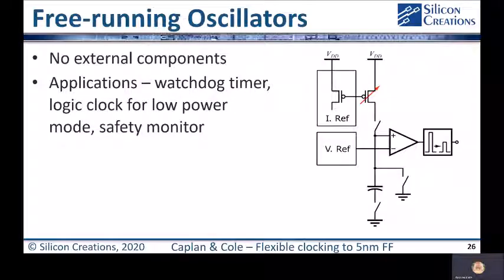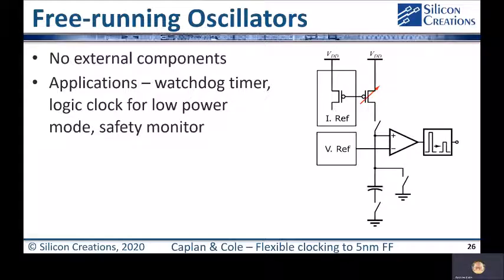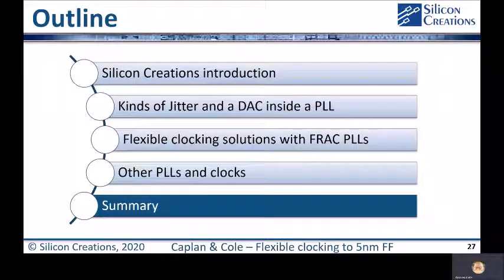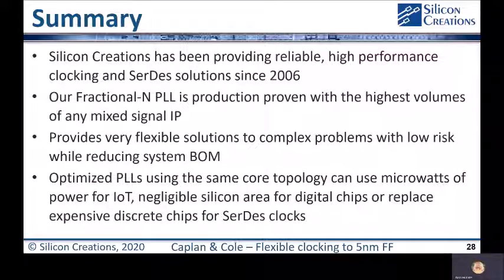There are also cases where even a PLL is more than you need, and for those applications we've produced three free-running oscillators. These RC or relaxation oscillators are used for watchdog timers, to generate independent clocks for automotive safety monitors, and for IoT chips without any external components. Thank you very much for listening to my talk. Today I've introduced our product range and some flexible solutions in production from 5 nanometers to 180, as well as some of our specialized PLLs.